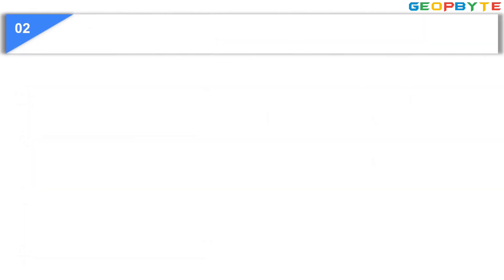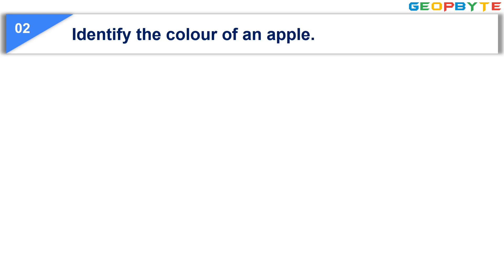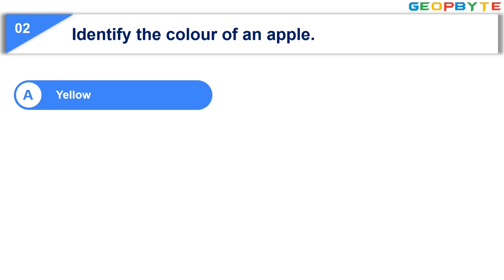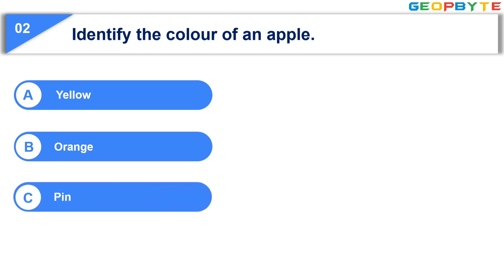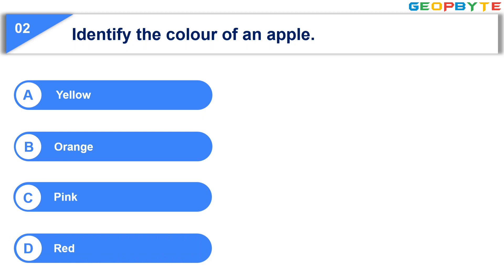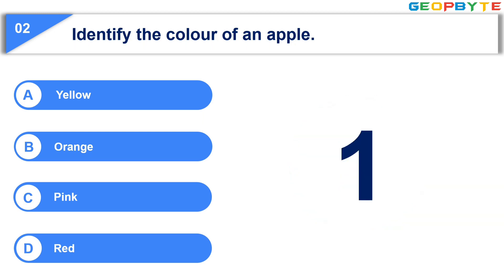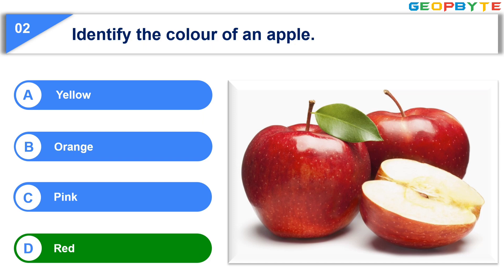Moving to the second question. Identify the color of an apple. Option A, yellow. Option B, orange. Option C, pink. Option D, red. Your time starts now. Your time is up and the correct answer is Option D, red.